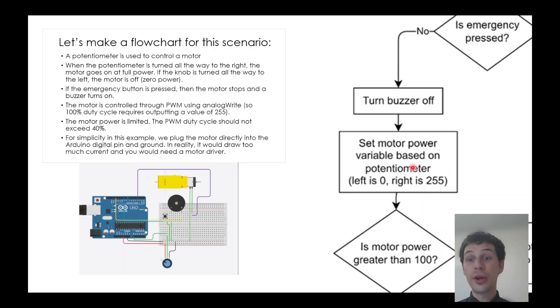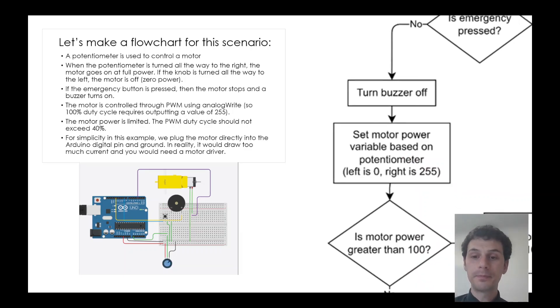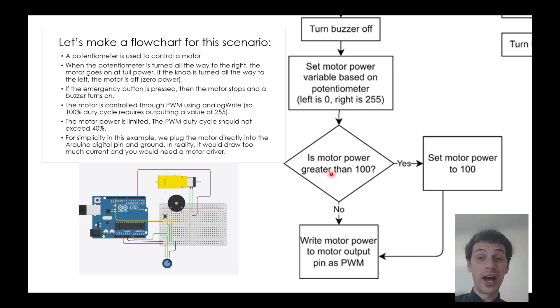I set the variable based on the potentiometer. The variable should be zero if the potentiometer is all the way to the left, and 255 if it's all the way to the right. Then I check, is it bigger than 100? If so, change it to 100, because I don't want the motor power to be too high. I don't want it to be more than 100 out of 255, about 40%. So if it is, I'll update that variable to 100.